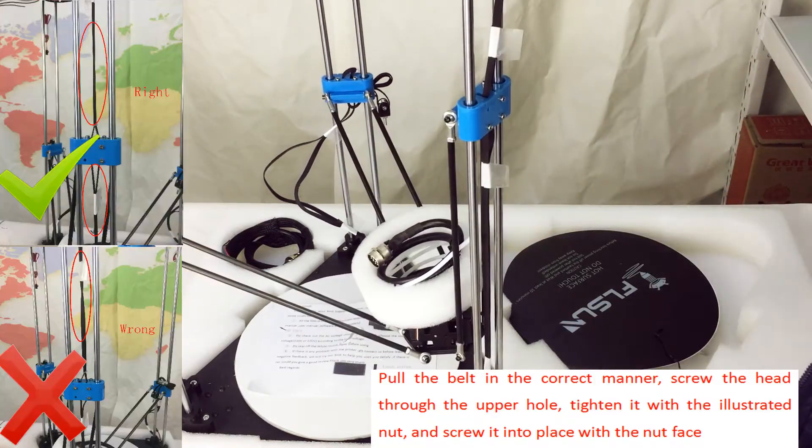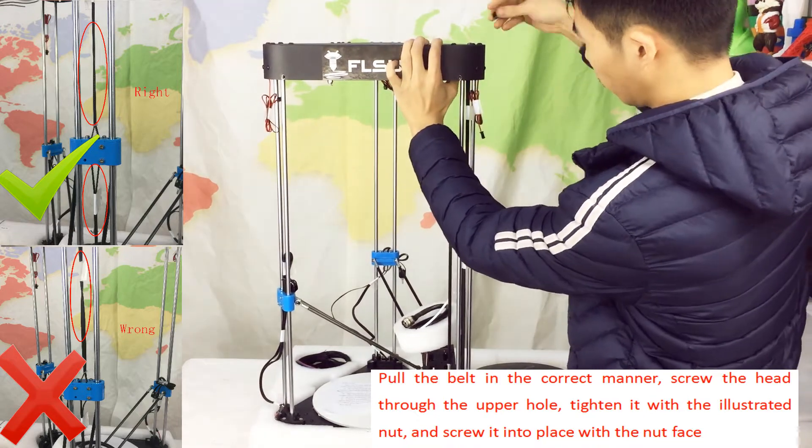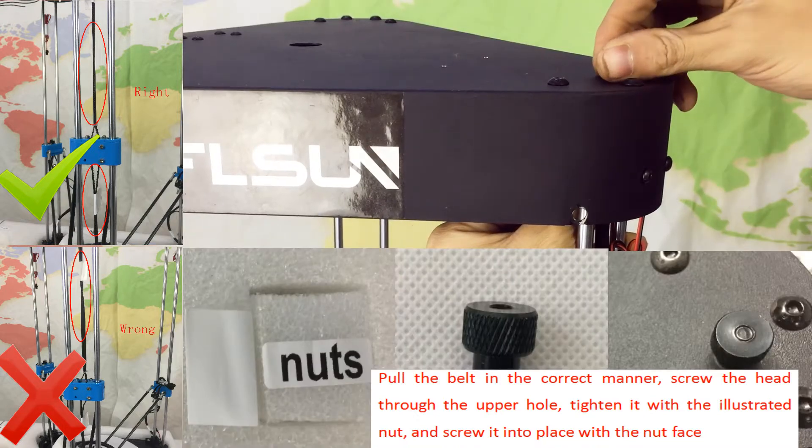Pull the belt in the correct manner, screw the head through the upper hole, tighten it with the illustrated nut, and screw it into place with the nut face.